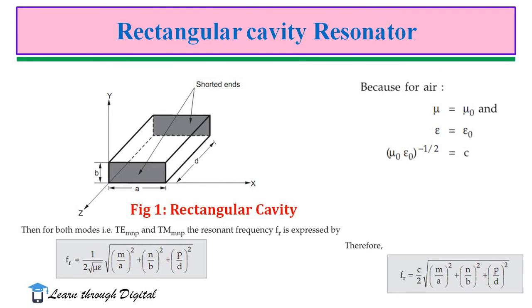The first type is the Rectangular Cavity Resonator. This figure illustrates the Rectangular Cavity Resonator — a rectangular waveguide section with short circuits placed at both ends. The resultant configuration is called a Rectangular Cavity Resonator, in which the signal bounces back and forth between the opposite ends. The Resonant Frequency for both TE and TM waves is: F = (1 / 2√(με)) × √((m/a)² + (n/b)² + (p/d)²), where a, b, and d are the dimensions of the cavity.